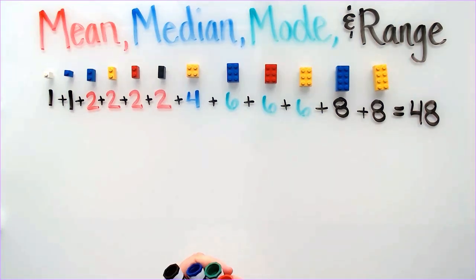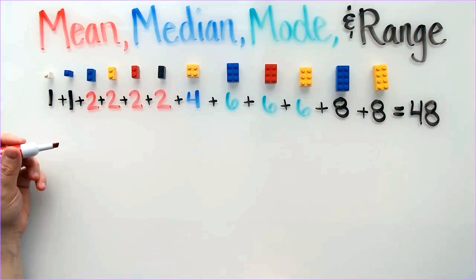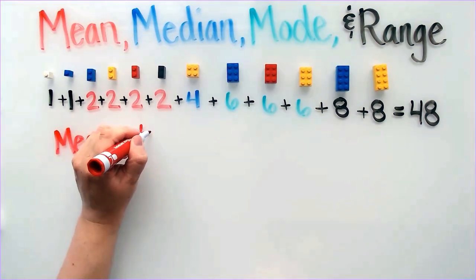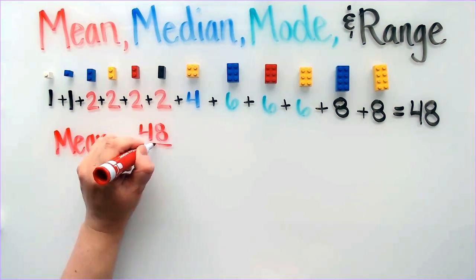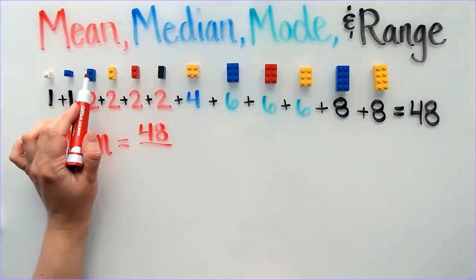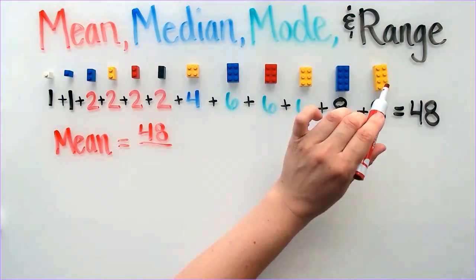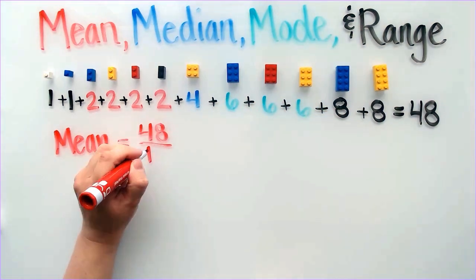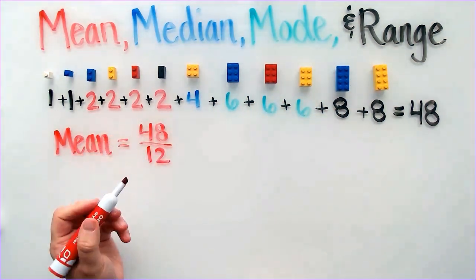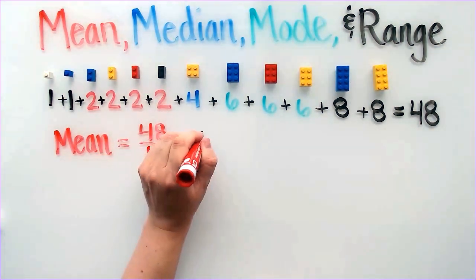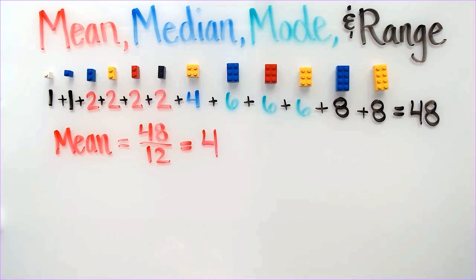In order to find the mean, I will need to take the average. I will take the total number of studs and divide by the number of Lego pieces. I have 12 Legos. 48 divided by 12 is equal to 4. This means that the mean is 4.